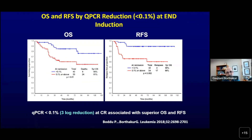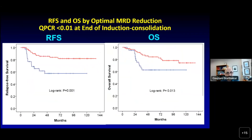We did a similar analysis looking at qPCR reduction at the end of induction. If you have optimal qPCR reduction — which we termed as less than 0.1 — the chances of overall survival and relapse-free survival are much higher compared to not achieving that optimal reduction after cycle 1. After patients finish all consolidations, the qPCR value threshold changes to less than 0.01, and with sustained qPCR reduction at that value, relapse-free survival is much better and overall survival approaches about 80% at six to seven years.